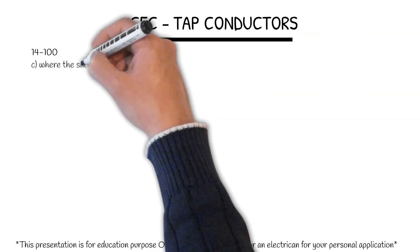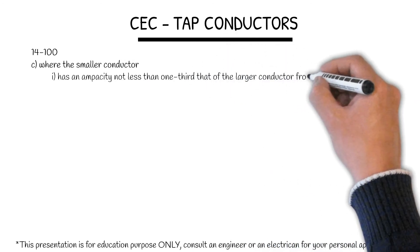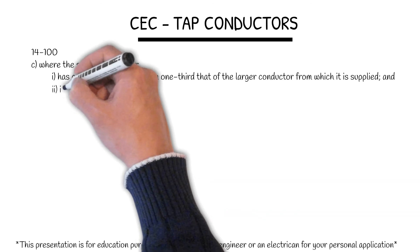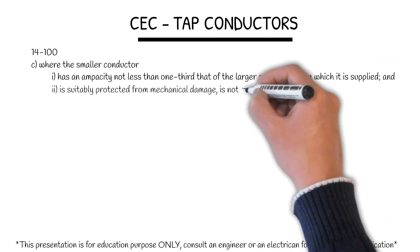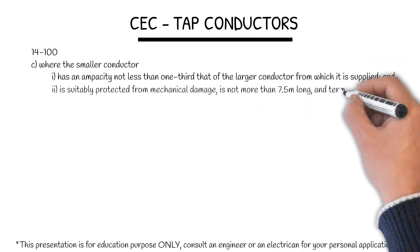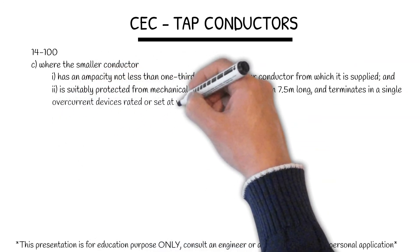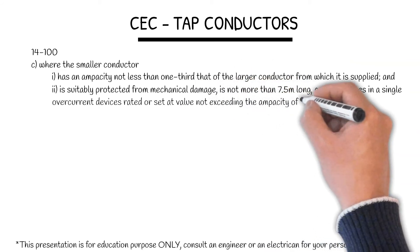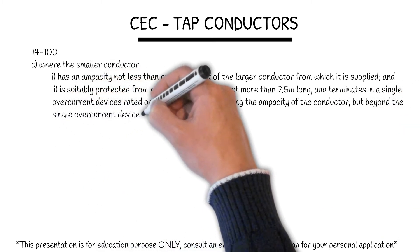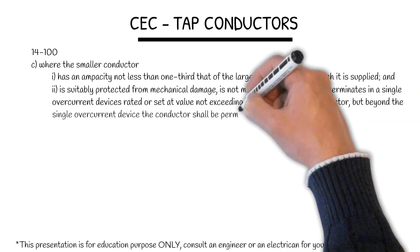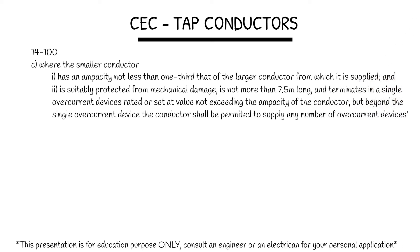14-100 Subrule C: the smaller conductor has an ampacity not less than one-third that of the larger conductor from which it is supplied, and it is suitably protected from mechanical damage. It is not more than 7.5 meters long, and terminates in a single overcurrent device rated or set at a value not exceeding the ampacity of the conductor. But beyond the single overcurrent device, the conductor shall be permitted to supply any number of overcurrent devices.